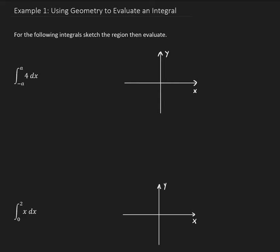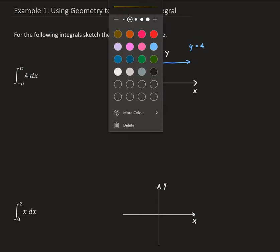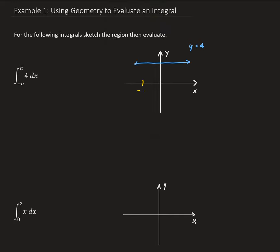On the first one, we have the integral from minus a to a of 4 dx. So that is basically y equals 4, which is just a horizontal line. This is going between minus a and a, so minus a is here and positive a is over here. Therefore the region we're interested in is between y equals 4 and the x-axis, between negative a and a.